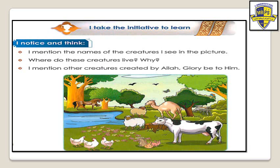Like what? Who can tell me? Camel. Yes. What else? Cow. Yes. Horse. Sheep. Excellent. Rabbits. And hens. These are animals. What about trees? Many trees. And also birds. Grass. All of these are creatures.